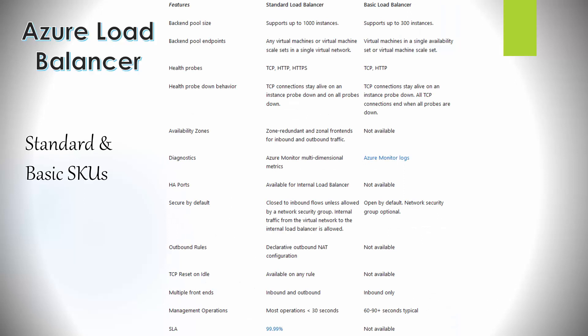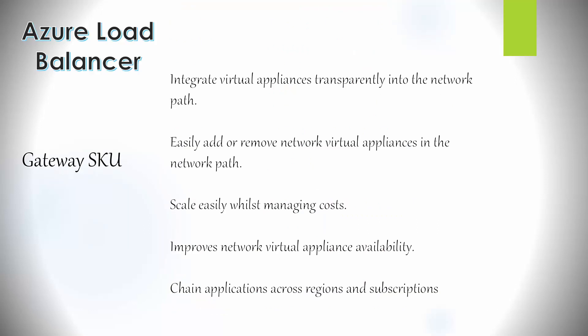There are two main SKUs: the Standard SKU and the Basic SKU. The Standard SKU is much more powerful — for example, it supports 1,000 backend pool instances compared to 300 for Basic. Microsoft recommends the Standard SKU. Standalone VMs, availability sets, and virtual machine scale sets can only be connected to one SKU, and you cannot change the SKU from an existing resource — so you cannot move from Basic to Standard. There is also a third SKU, the Gateway SKU, designed for high availability and performance scenarios with third-party network virtual appliances such as firewalls, IPS systems, DDoS protection, and advanced analytics.